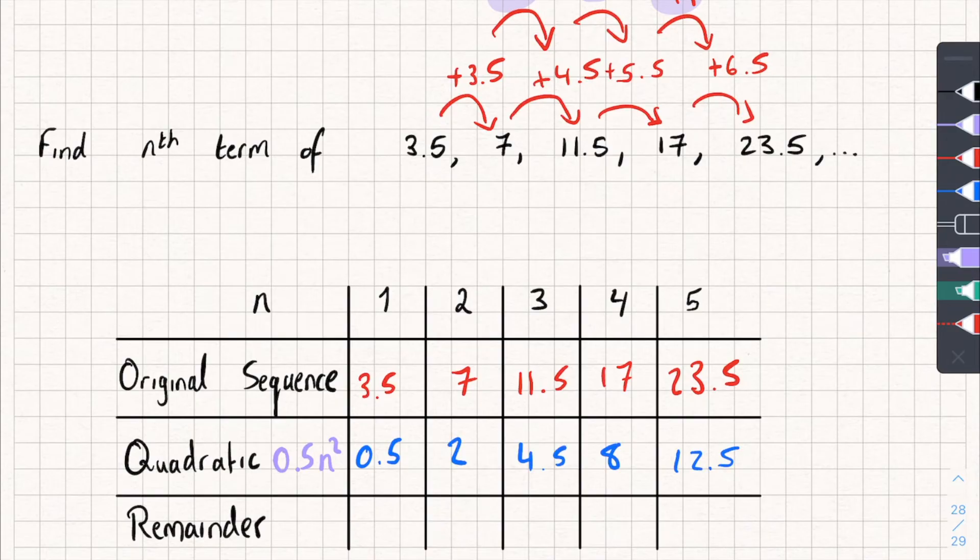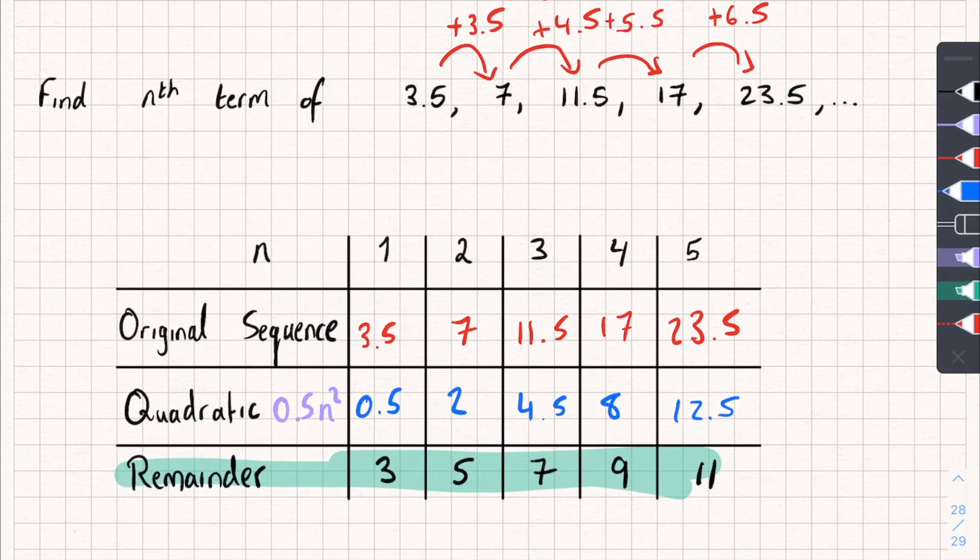Now, the remainder term. You'll remember we take the original, and then we subtract the quadratic. So, for the first one, we're going to get 3, 5, 7, 9, and 11. So, once we've got these remainders, we then need to find the nth term of this linear sequence, which this always should be a linear sequence. So, we've got plus 2, plus 2, plus 2, and plus 2. So, the nth term for this is going to be 2n plus 1.